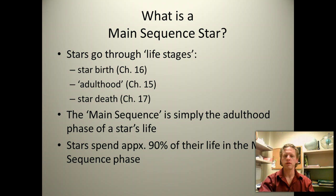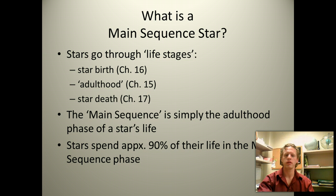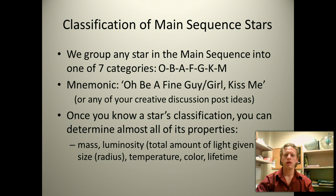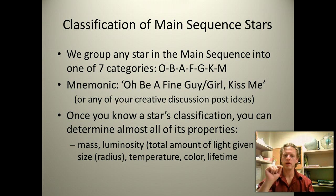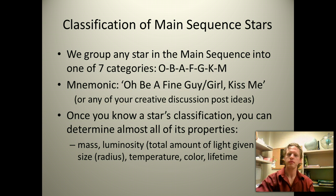Once you know one thing about a main sequence star, you know everything else about it. If you have a main sequence star, it falls into one of seven classes: O, B, A, F, G, K, M.